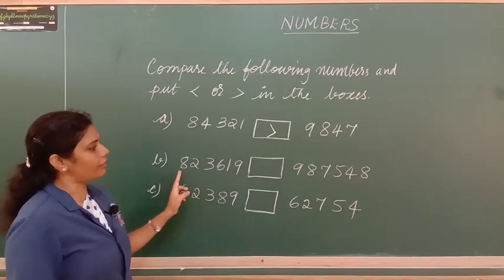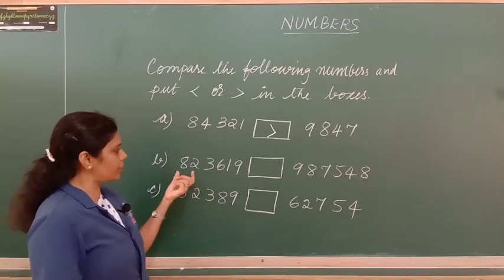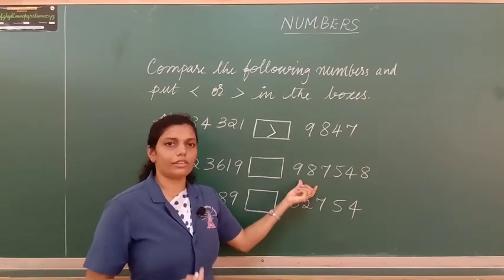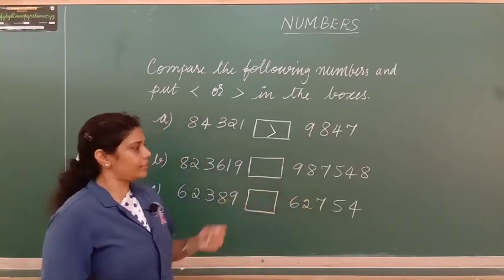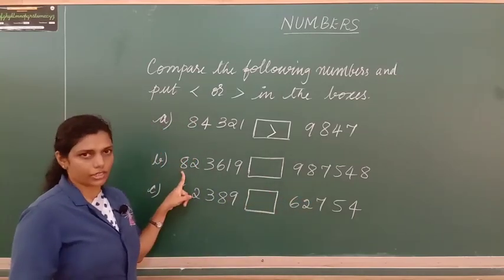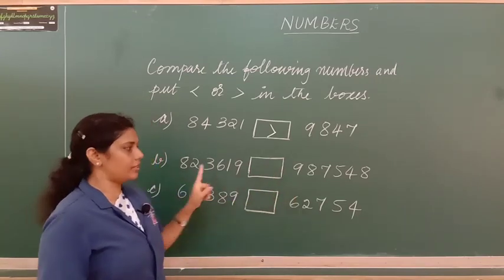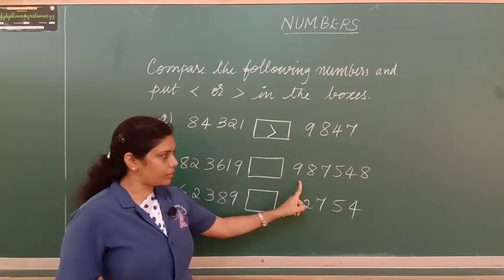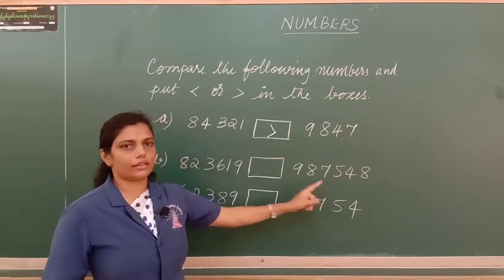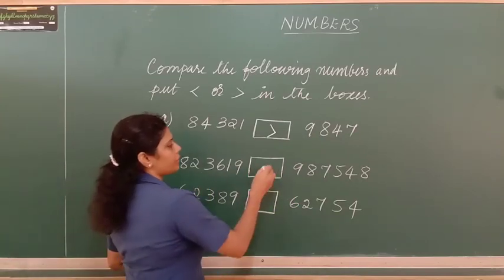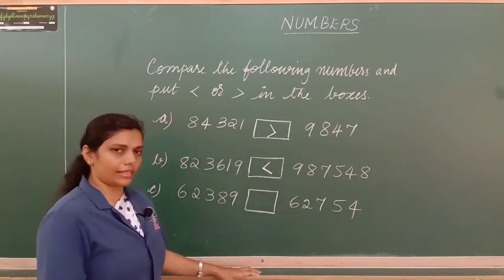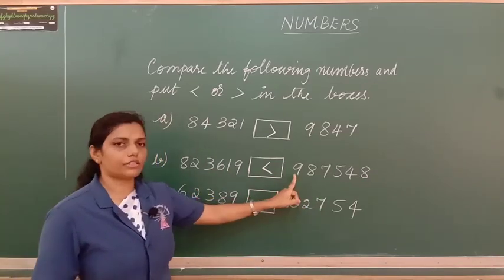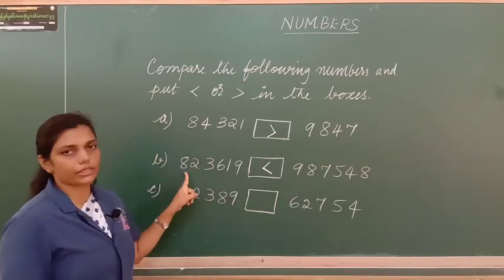In the next comparison both numbers have 6 digits. When numbers have equal digits, we start with the leftmost digit and compare. Here the first number starts with 8 and the second starts with 9. So the second number is greater, and we put the less than symbol.